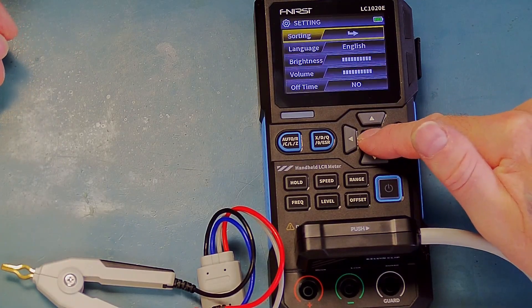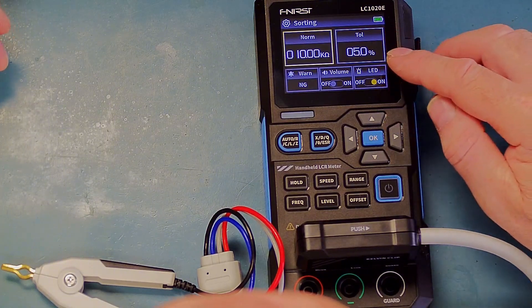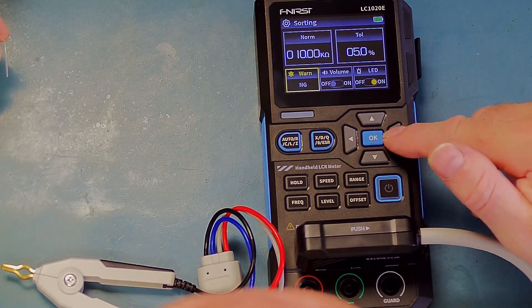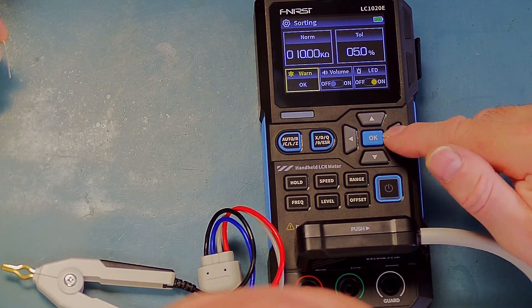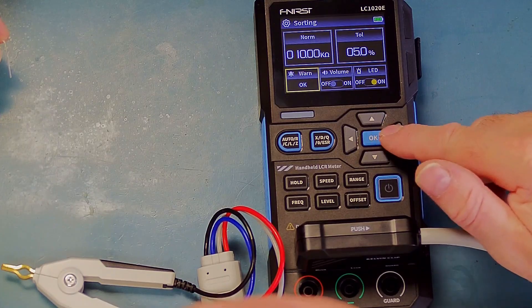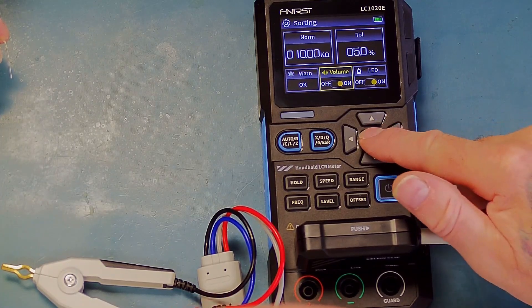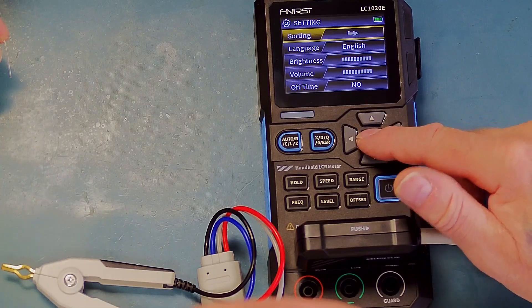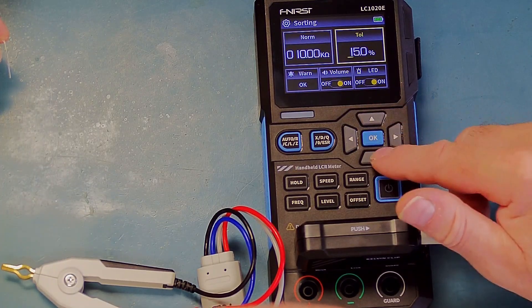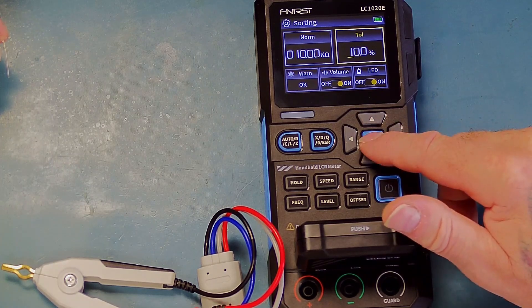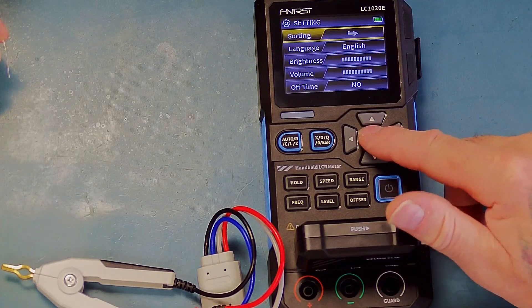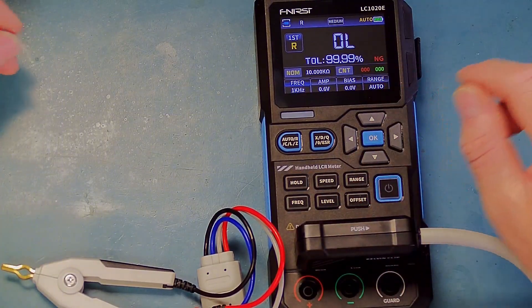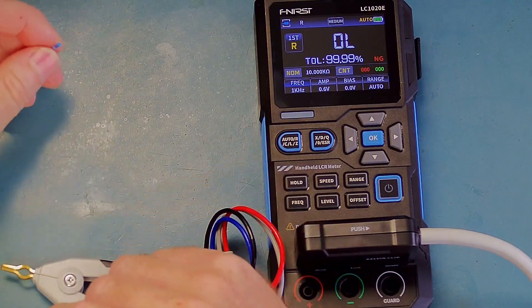Let's actually try setting it up. We've got the 'no good' warning—let's turn that on. Let's turn the volume on, and let's just put the tolerance as 10 percent. Okay, go into place mode.